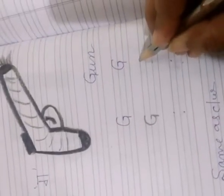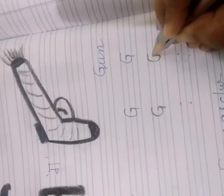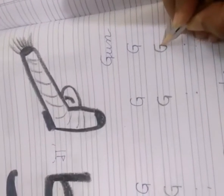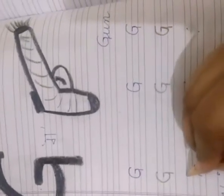Ek baar fir aap dhekhti hai student. Sab se pahle aapko bananai hai letter G. G ko upar tak liekke gai. Slipping line banaii. Slipping line ke saath hi bana diya standing line. Or, aisee ban gaya aapka letter G.